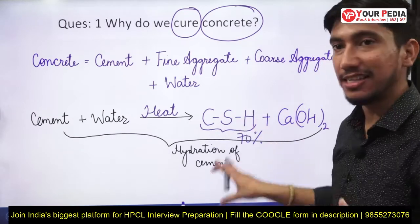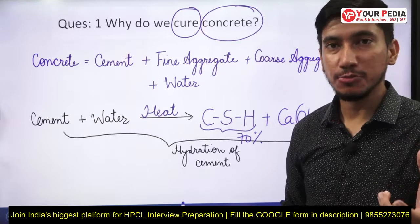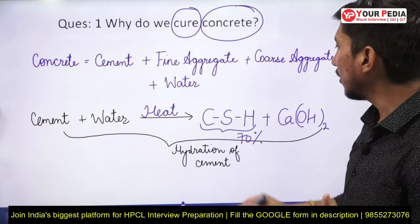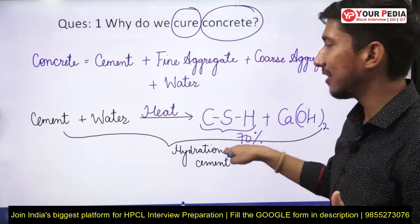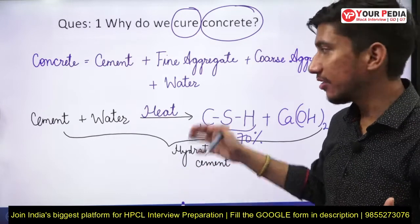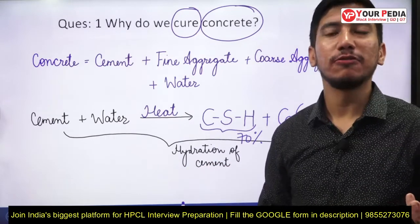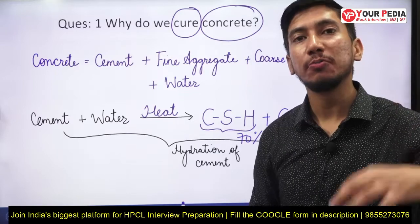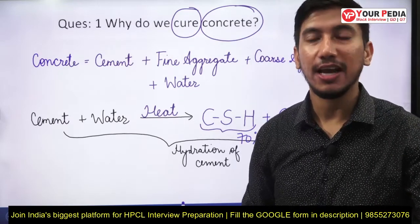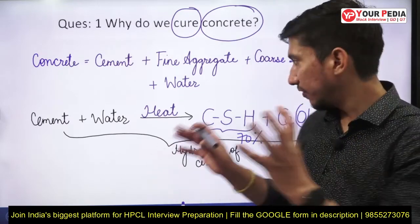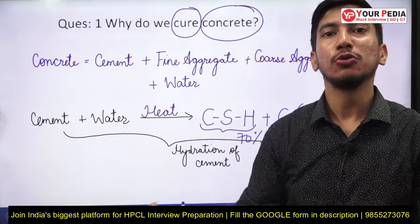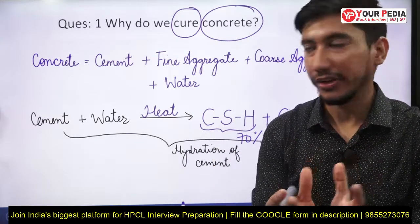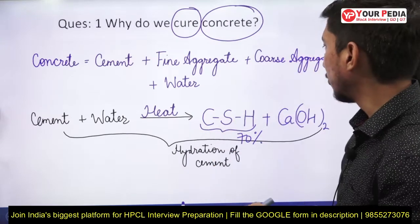CSH — hydrated calcium silicate, also called tobermite gel — makes up about 70% of the products formed and is the most desirable compound. It is responsible for imparting strength to the concrete and also for imparting binding ability, allowing the concrete to hold all its constituents together in the matrix.